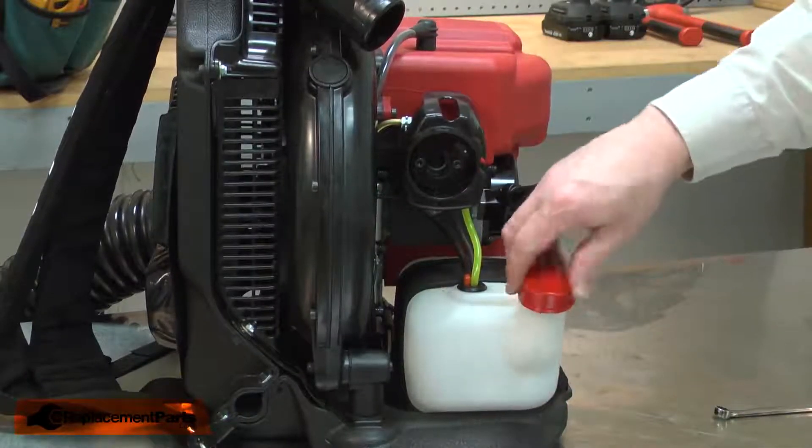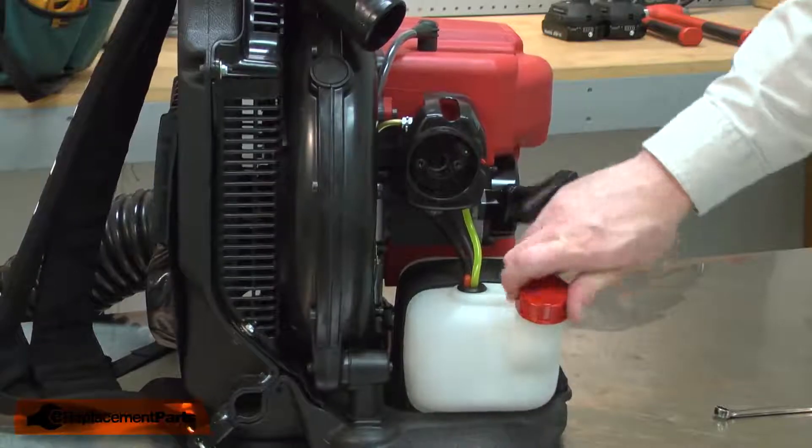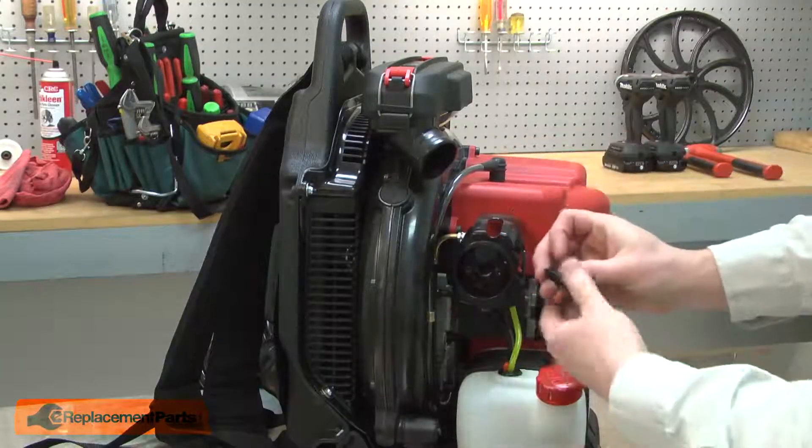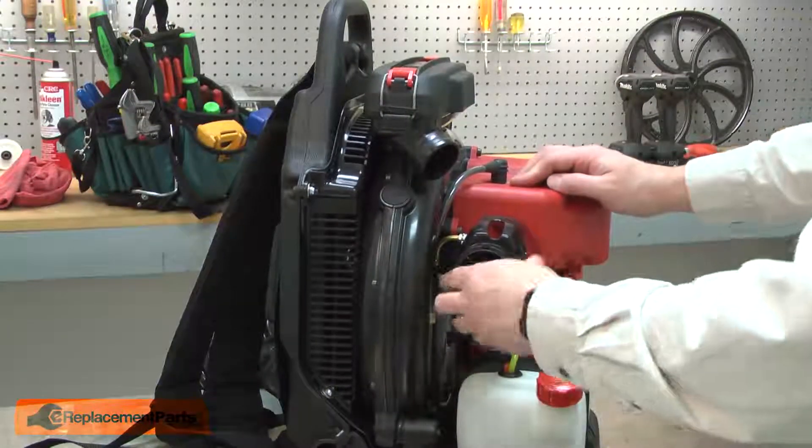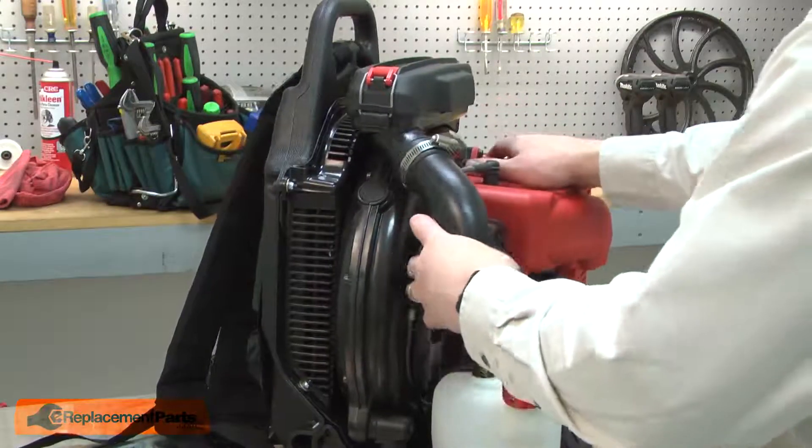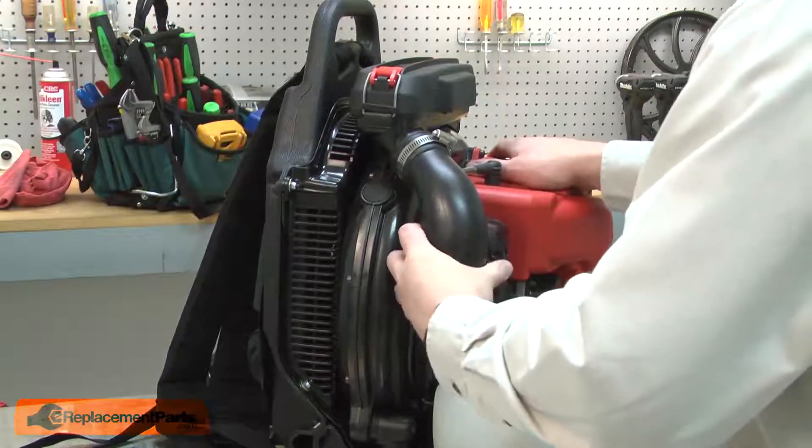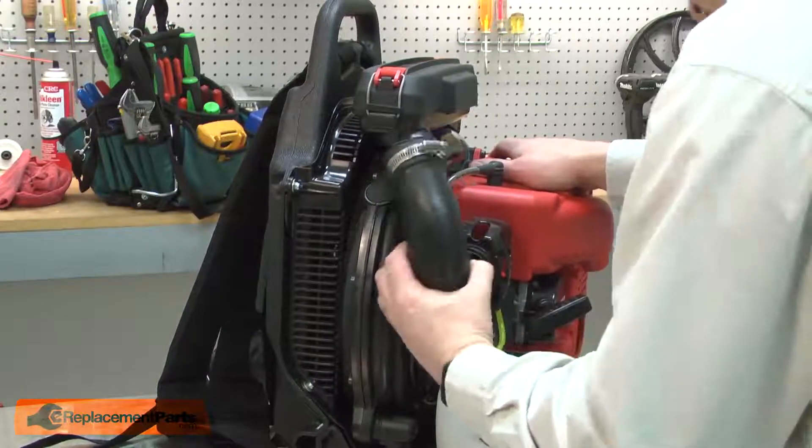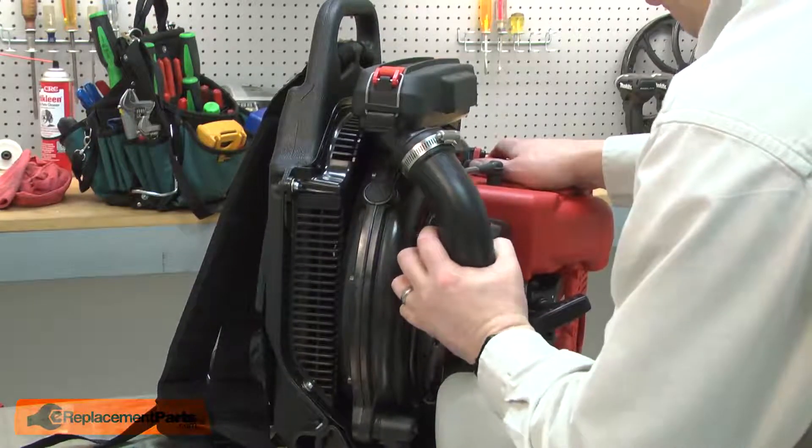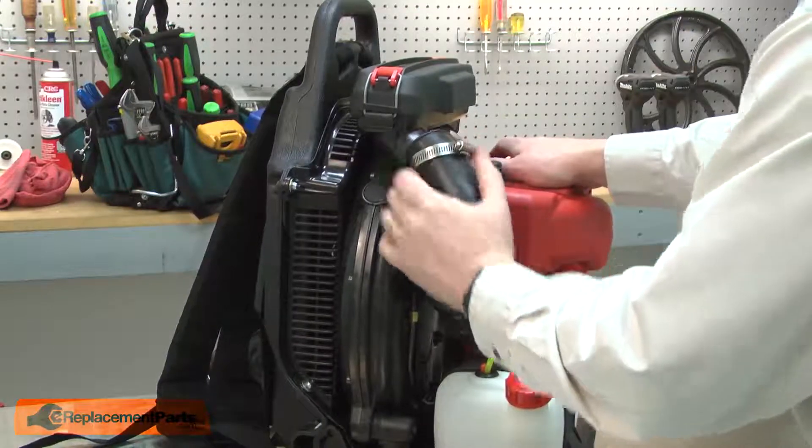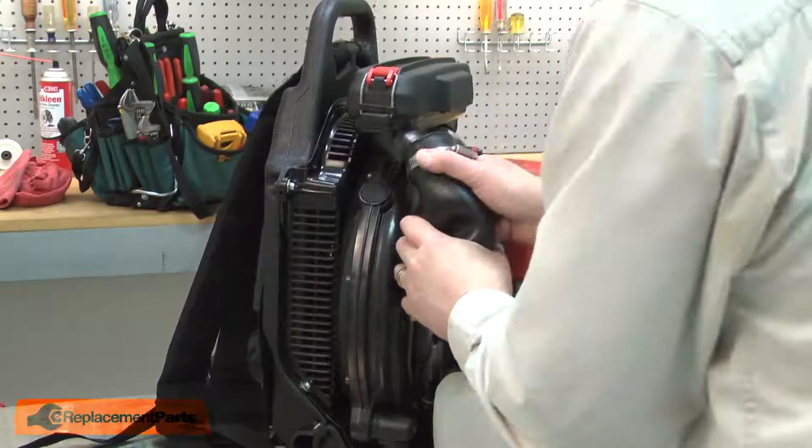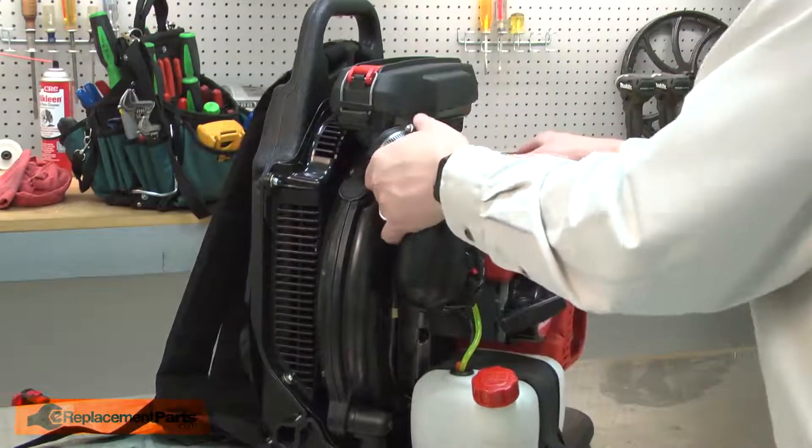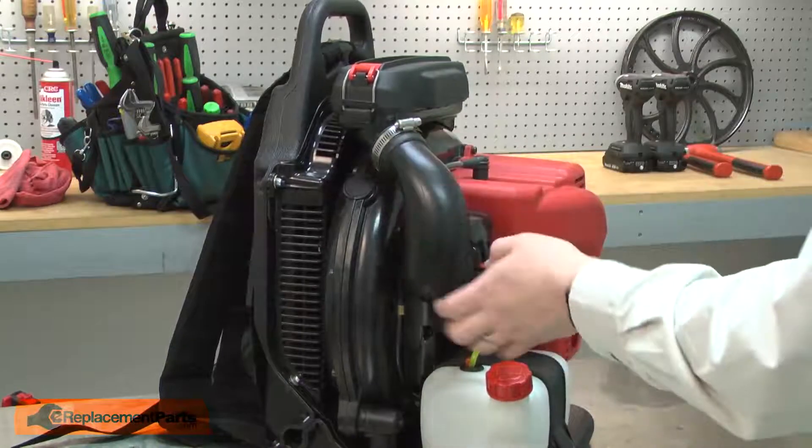I'll tighten the fuel cap that I loosened previously. I'll finish up by reinstalling the intake pipe. I'll remove the diffuser from the pipe, install it back to the base, and now I can slide the pipe over it. Once the pipe's in place, I'll tighten both the clamps.